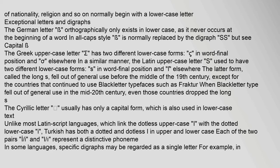The German letter ß orthographically only exists in lower case, as it never occurs at the beginning of a word. In all-caps style it is normally replaced by the digraph SS. The Greek uppercase letter sigma has two different lower case forms: σ in word-final position and σ elsewhere. Similarly, the Latin uppercase letter S used to have two different lower case forms: s in word-final position and elsewhere — the latter form, called the long s, fell out of general use before the middle of the 19th century.